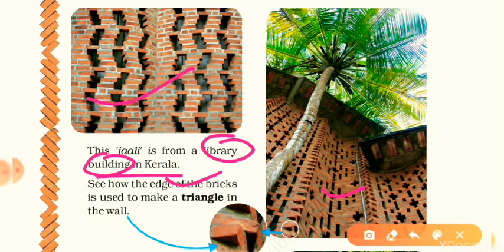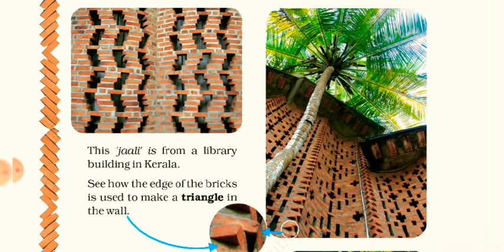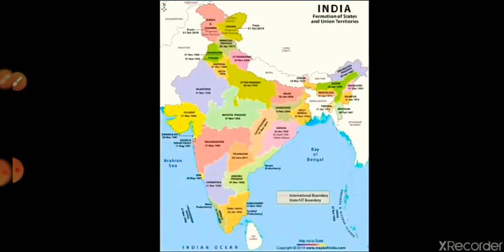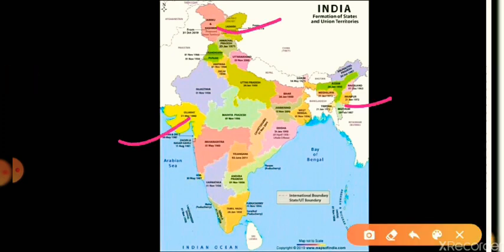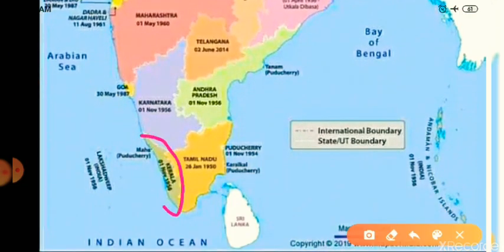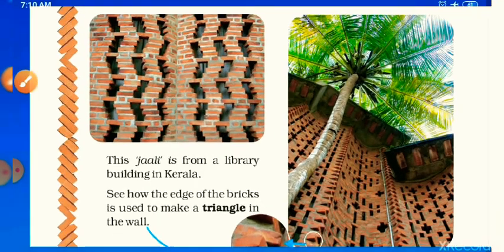Do you know in which direction Kerala is located on the map of India — east, west, north, or south? On your screen you have the political map of India. Try to search for Kerala. This is the east side, west side, north side, and this is the south side. Yes — on the south side, here is Kerala state. Did you find it?